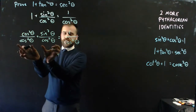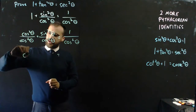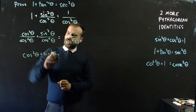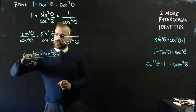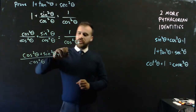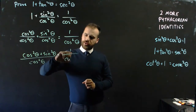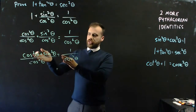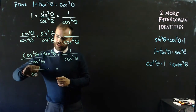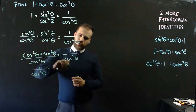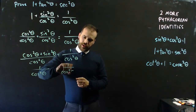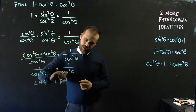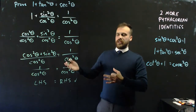I can smush these together now, because I've got the same denominator, and I get cos squared theta plus sine squared theta over cos squared theta equals 1 over cos squared theta. And finally, by the Pythagorean identity, cos squared theta plus sine squared theta is 1, so we have 1 over cos squared theta equals 1 over cos squared theta, which means the left-hand side equals the right-hand side — tick, proven.